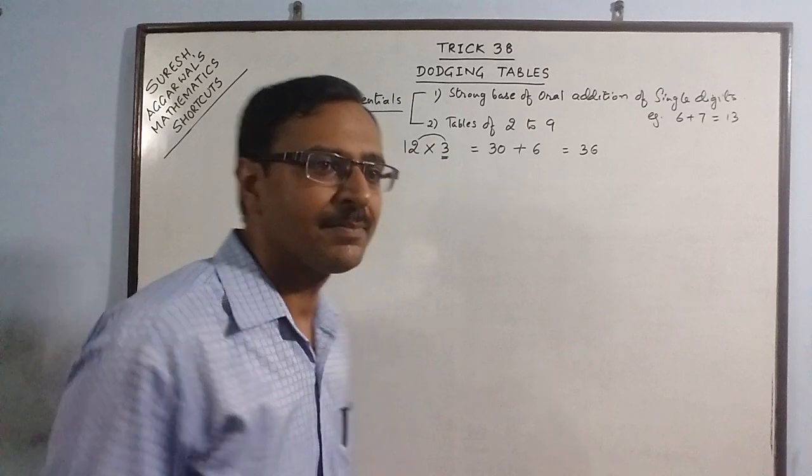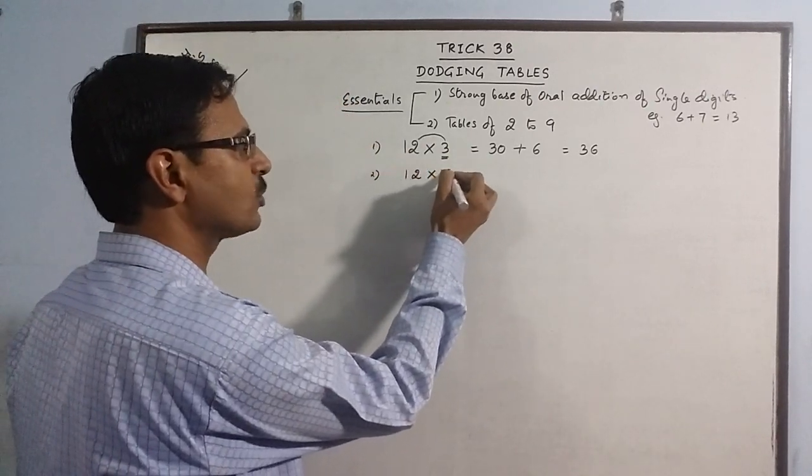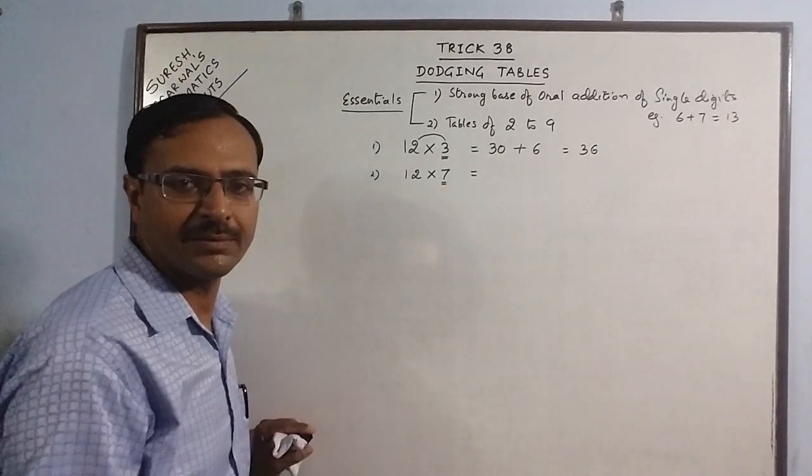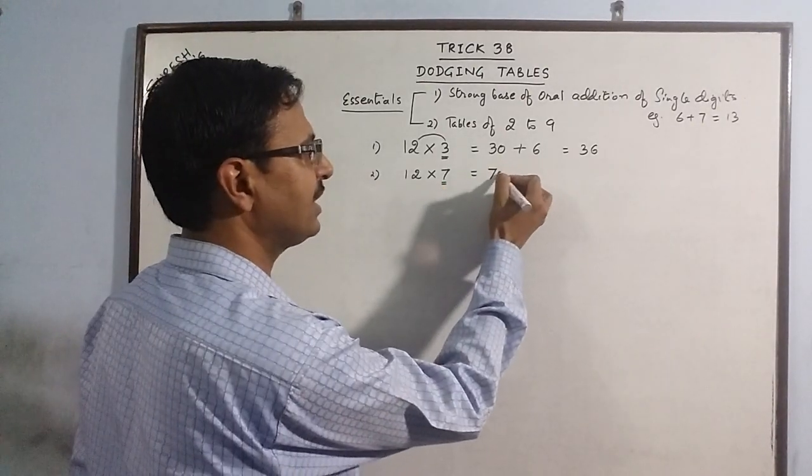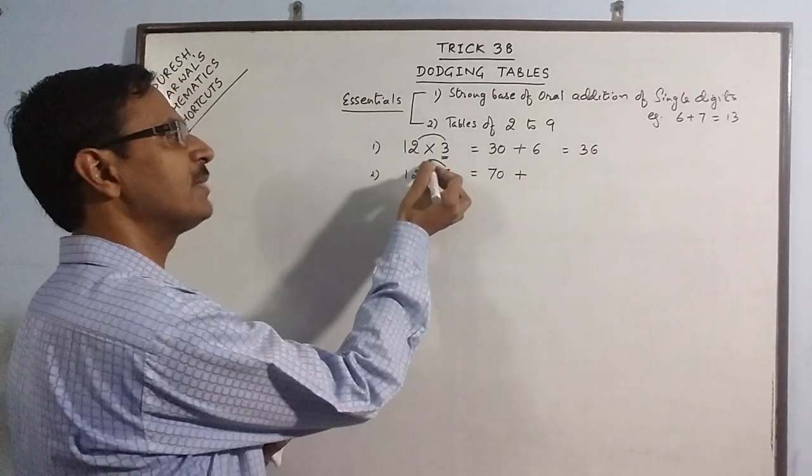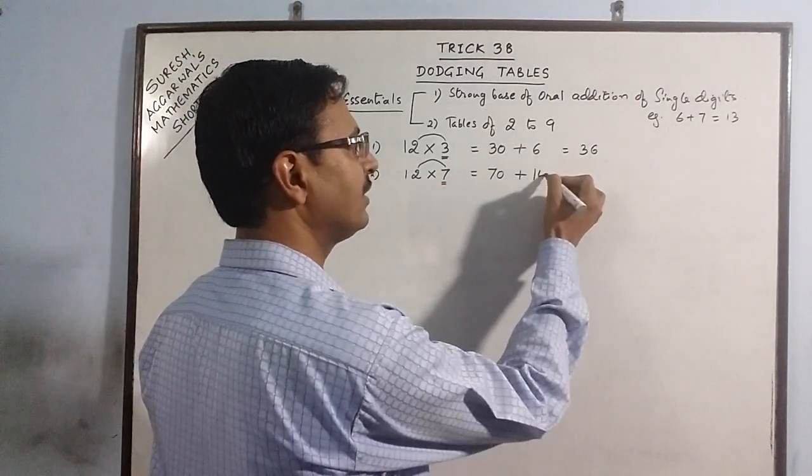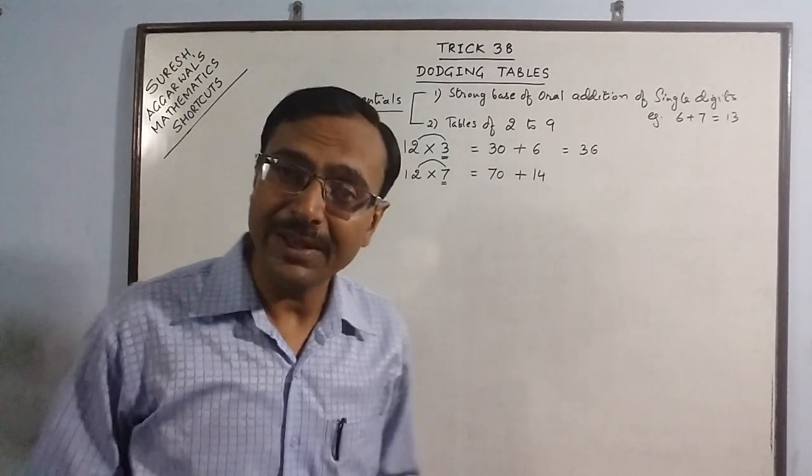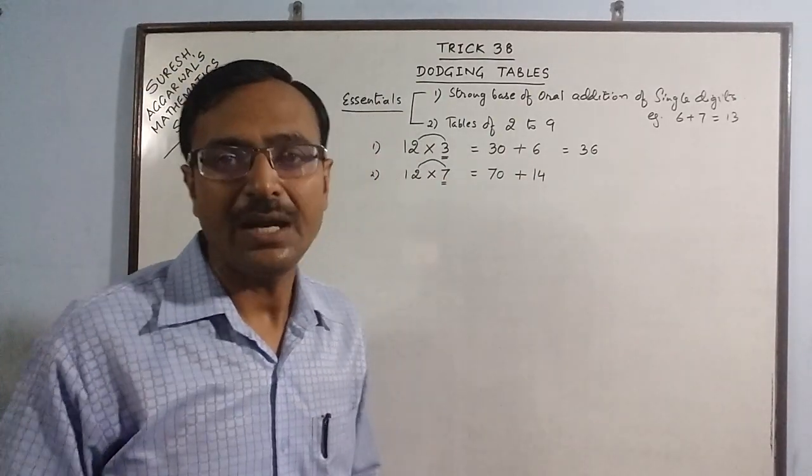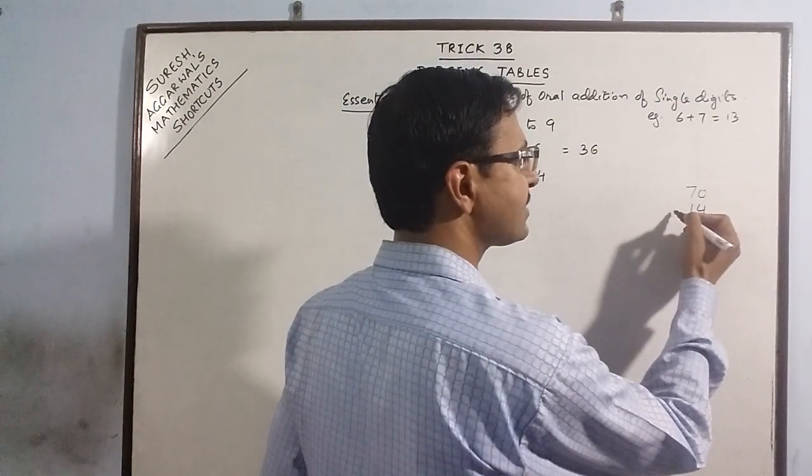Similar example: we have the same table of 12 and he has to multiply it by 7. Apply the same concept again. He puts a 7 and a 0, and just multiplies this by 2. He knows the single digit tables: 7 twos are 14.